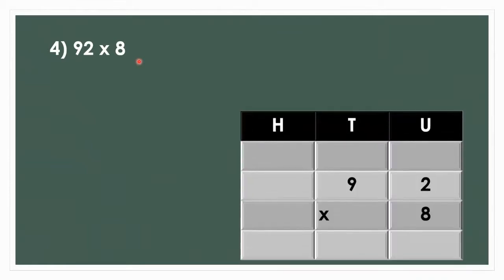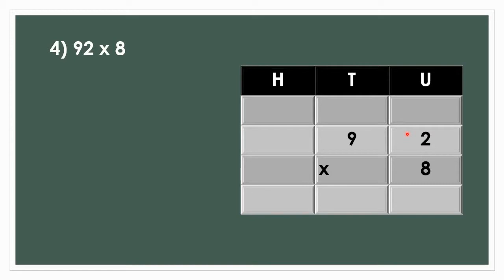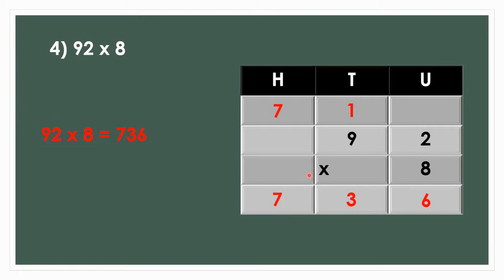Next is 72 multiplied by 8. Let us arrange it in the vertical form. First, we multiply 2 units by 8. 8 twos are 16. We carry 1 up and write 6 in the units place. Now 8 sevens are 56, and 56 plus 1 is 57. We write 7 in the tens place and 5 goes in the hundreds place, giving us a final product of 576. So 72 multiplied by 8 is equal to 576.